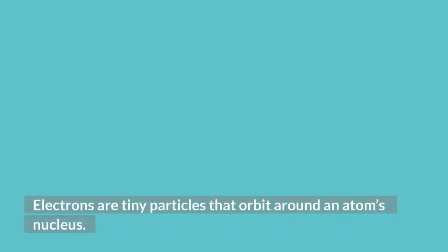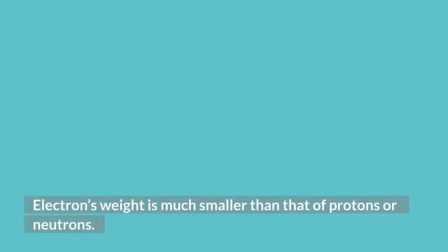Electrons are tiny particles that orbit around an atom's nucleus. Electrons' weight is much smaller than that of protons or neutrons.